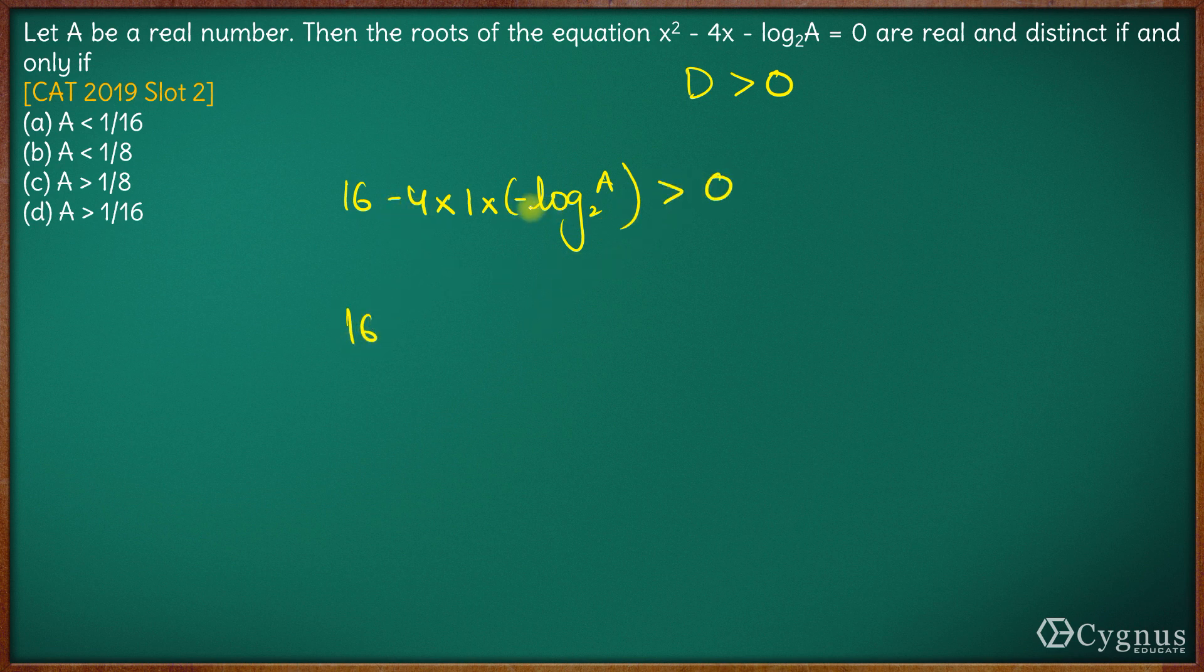So we have 16, minus into minus is plus, so 4 times log₂(a) should be greater than zero. Right? So 16 goes that side. We have 4 times log₂(a) should be greater than minus 16 here.